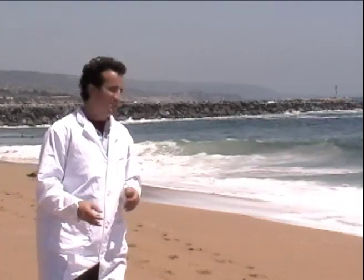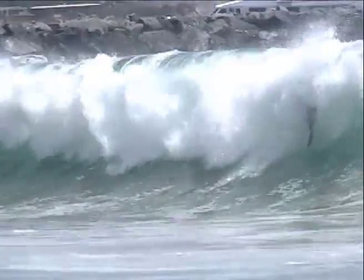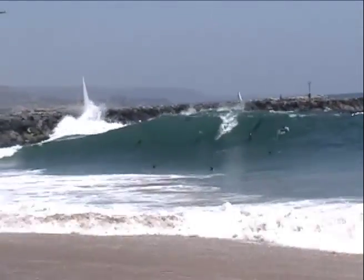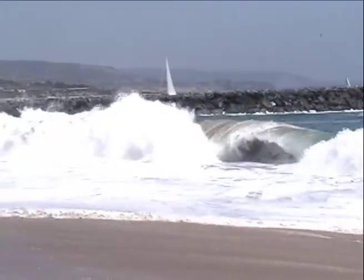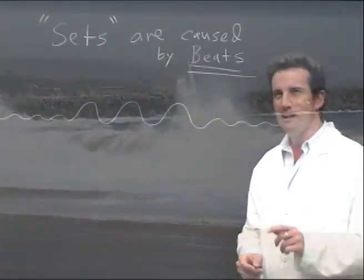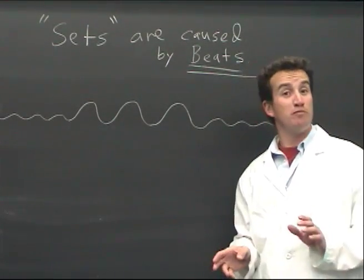Beats aren't just about sound waves. They explain why ocean waves seem to come in sets. Surfers notice that waves come in sets. That is, small waves, then big waves, then small waves, and so on. That's a wave interference phenomenon. Sets are a type of beats.